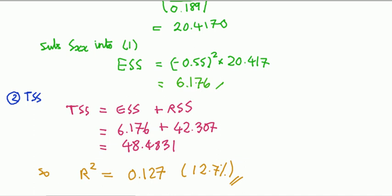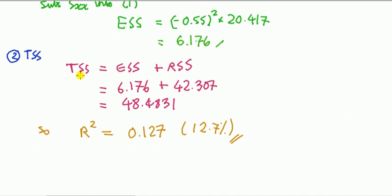Step two: compute the total sum of squares. We know that for a regression model with an intercept, this holds. So then TSS, we can get that.